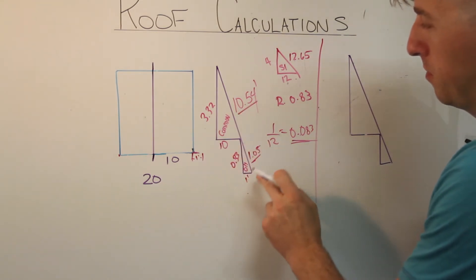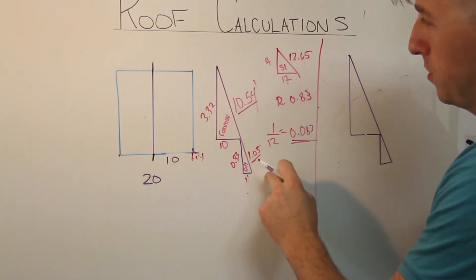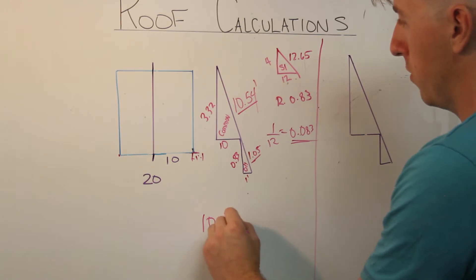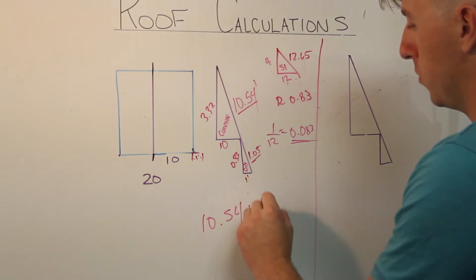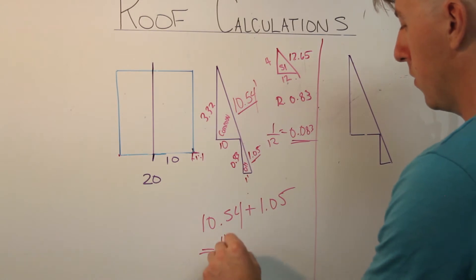0.33 squared plus 1 squared equals 1.05 using Pythagoras theorem. You can add these two together to get your total rafter length. So 10.54 plus 1.05 equals 11.59 feet.